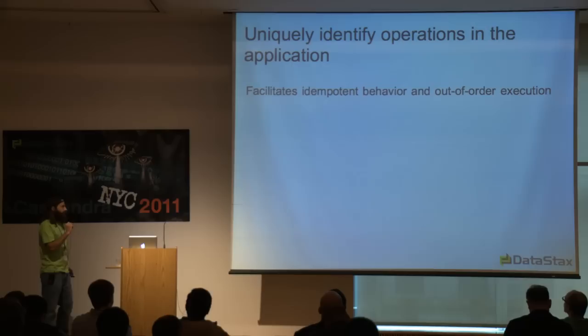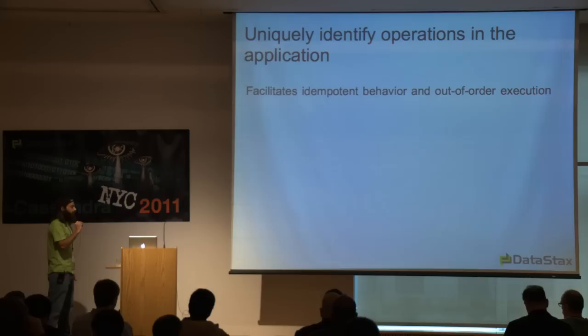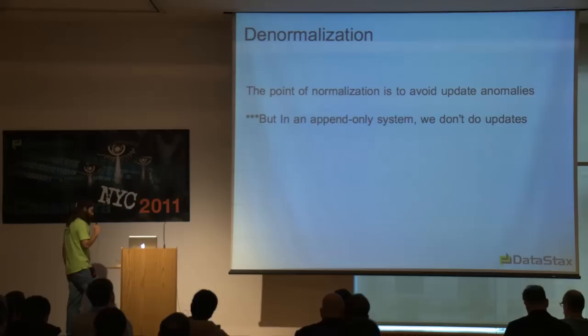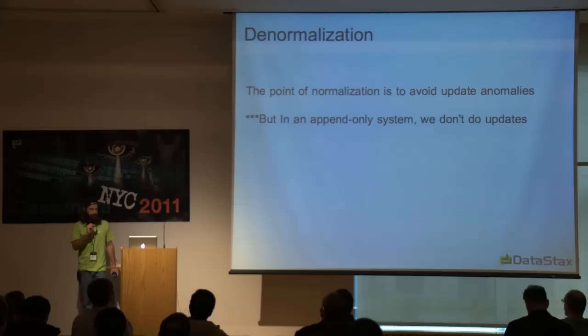Uniquely identifying operations in the application supports idempotency. You can support out-of-order execution: going across a network or trust boundary in a highly partitioned system, operations don't have to arrive in order — that's how you scale a big system. Denormalization: you're going to do this a lot with Cassandra. If you're doing a lot of denormalization, that means you're doing it right.